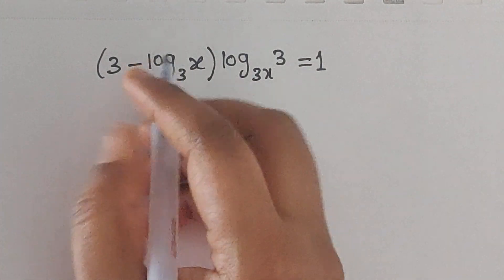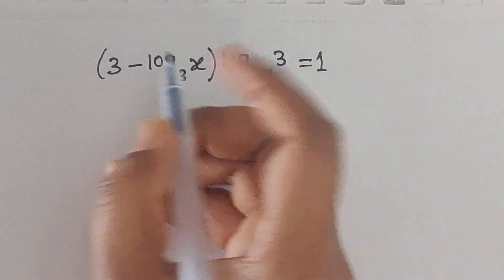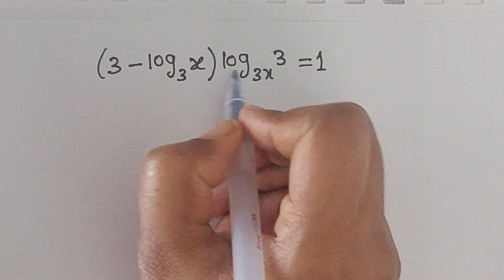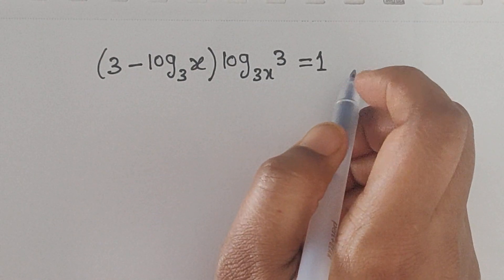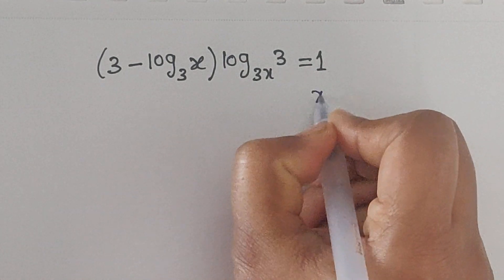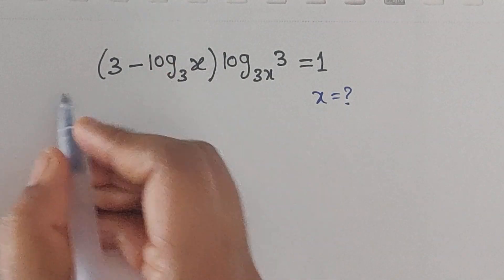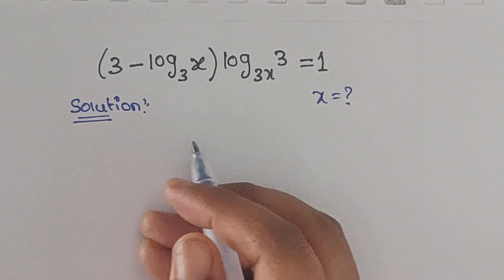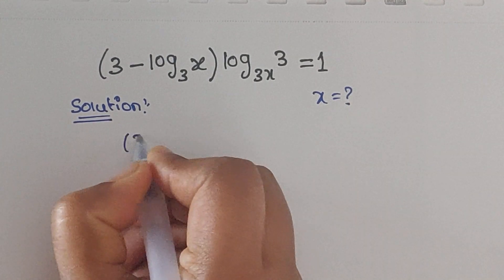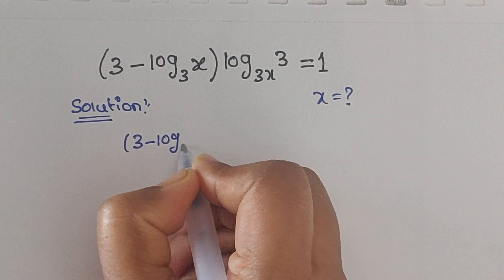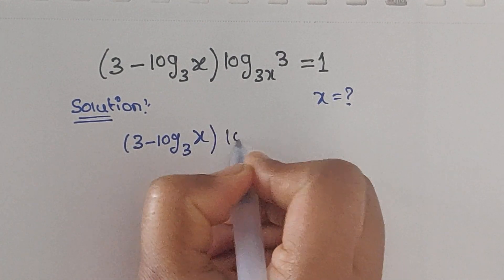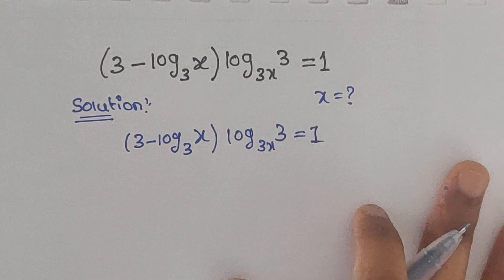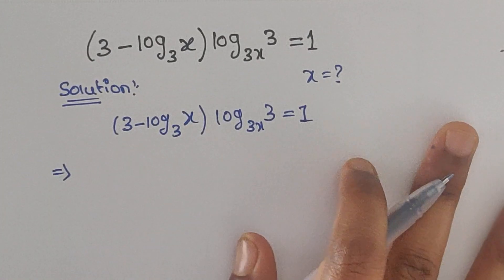Hello everyone, welcome back to our channel. Here we have one logarithm problem: 3 minus log base 3 of x, times log base 3x of 3, equals 1. In this problem we have to find the value of x. Let's see the solution. The question is given: 3 minus log base 3 of x times log base 3x of 3 equals 1.